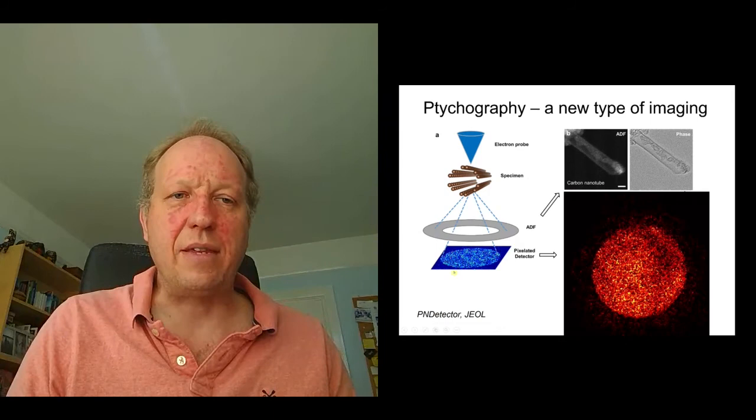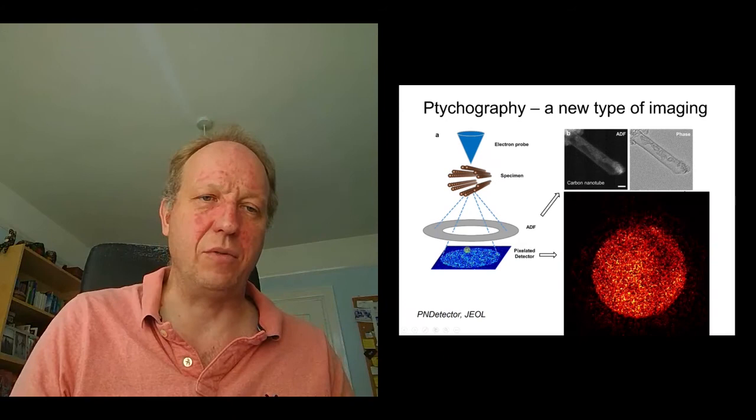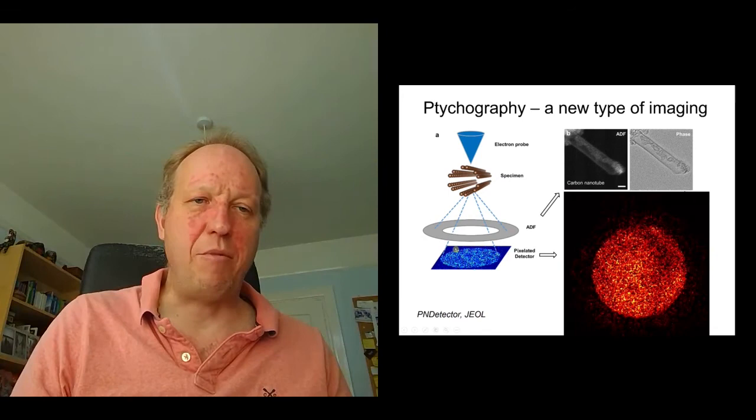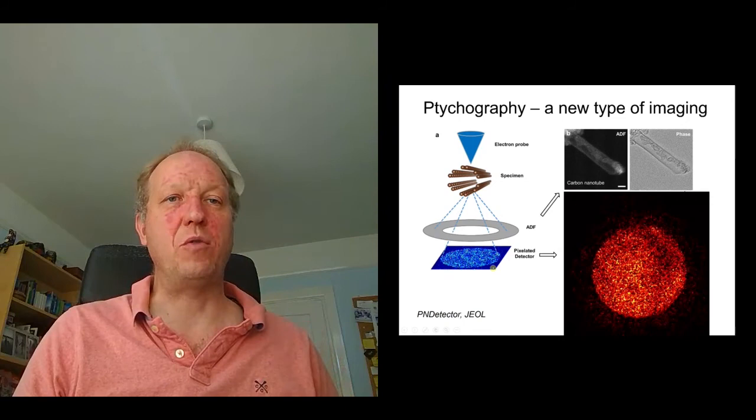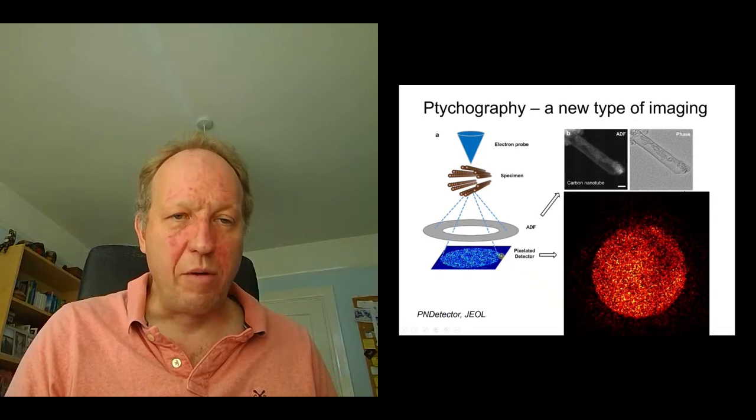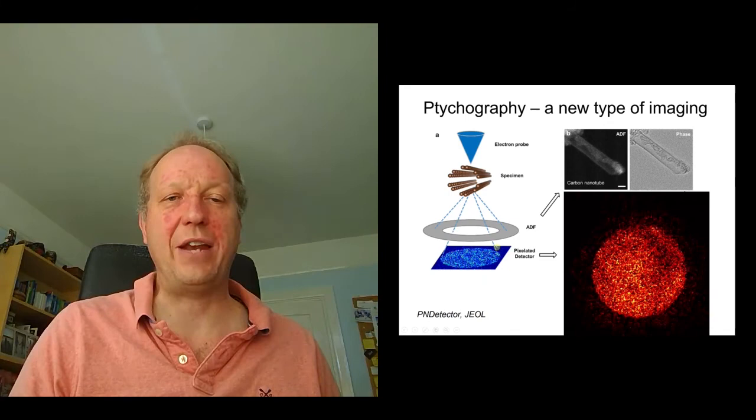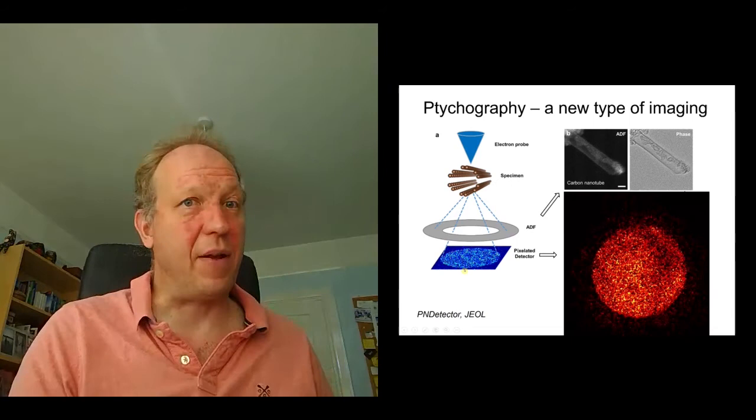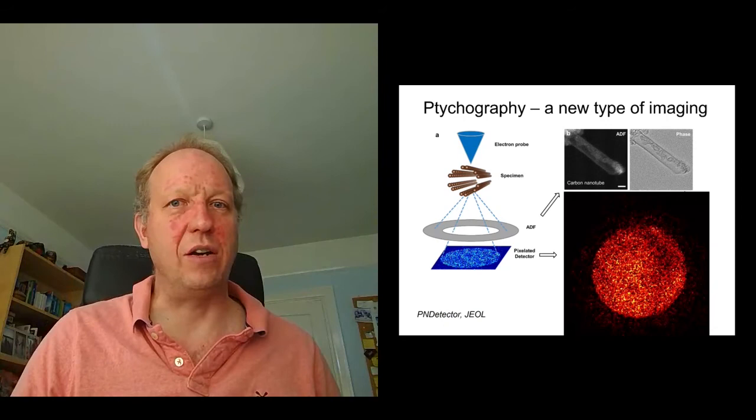But this is where we can use this other detector down here, which actually records the full scattering as a function of pixels. This is like a camera that can run very quickly for each illuminating probe position. This camera records all of the scattering over all the different angles, and we can then end up with what we call a four dimensional dataset for each two dimensional probe position during the scan of the probe. We record this two dimensional map of the detector plane of all the scattering that's going on and get this four dimensional data set.